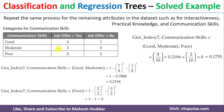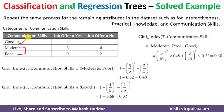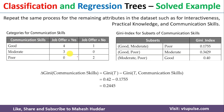For Communication Skill, there are also three possibilities, so we perform the same splitting subset calculation. We evaluate all three combinations and identify the minimum Gini subset. The Gini of Communication Skill equals 0.2445.